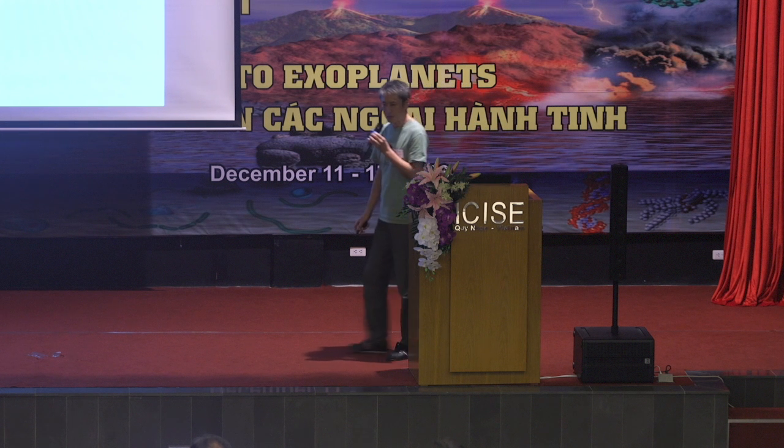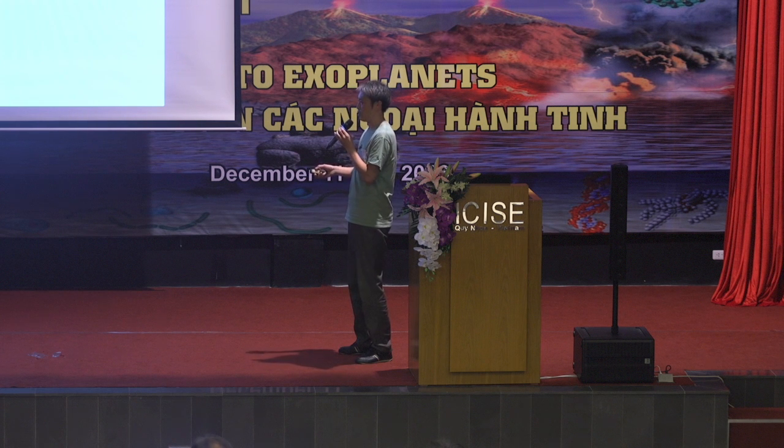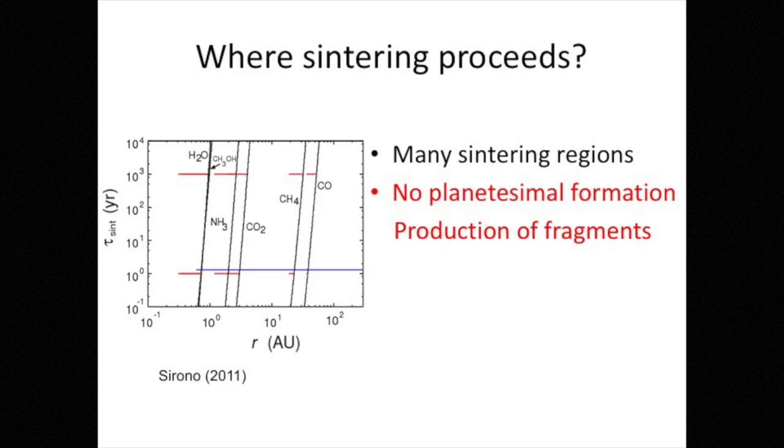And I would like to shortly discuss the region where sintering proceeds. This panel shows the x-axis is the distance from the central star in AU unit, and y-axis is the sintering time scale. And this solid line corresponds to the sintering time scales for different ices. For example, this line shows the sintering time scale of H2O ice. And this line is for carbon monoxide.